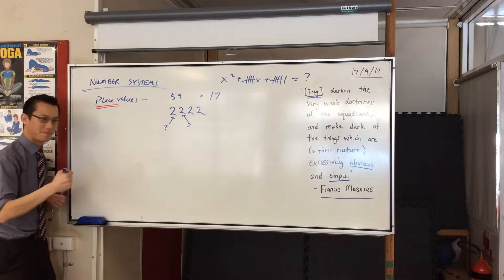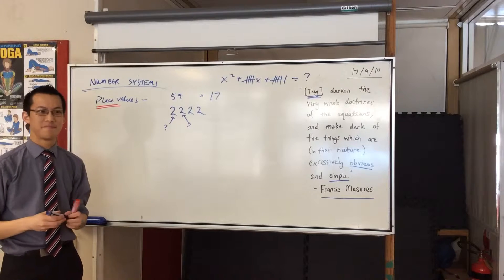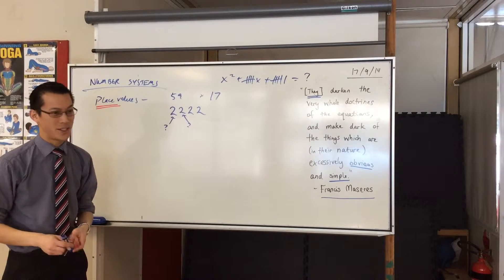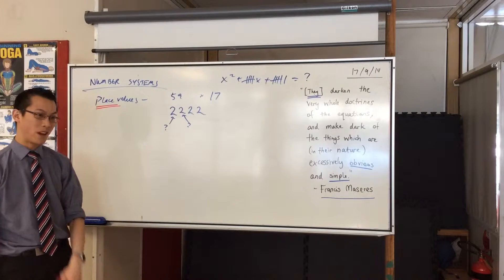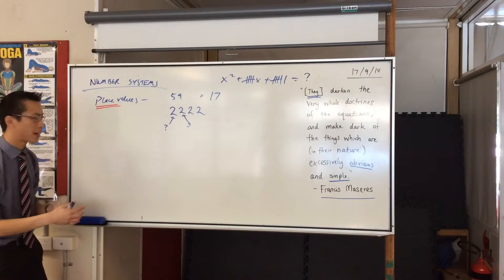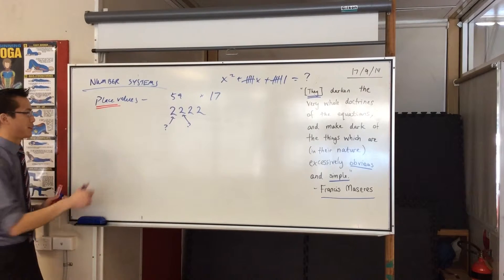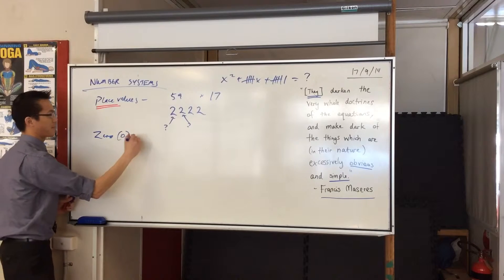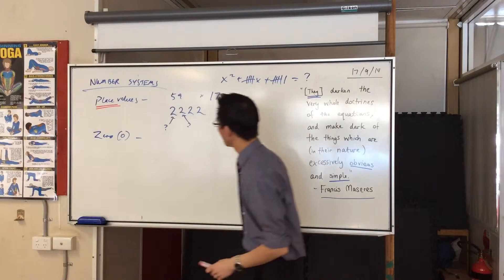So this place value system — that's weird. How did the Romans do operations? Not in the same way we did, and it's a lot more awkward because of the limitations of the system. So now we move on to zero. Why was zero invented?